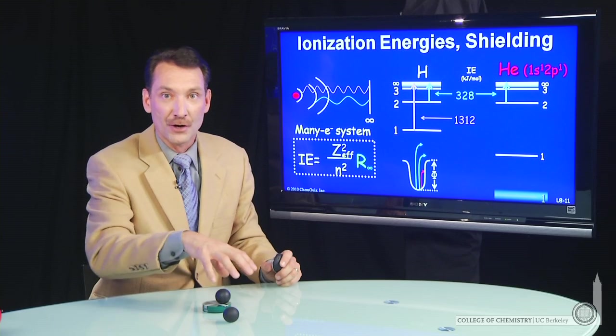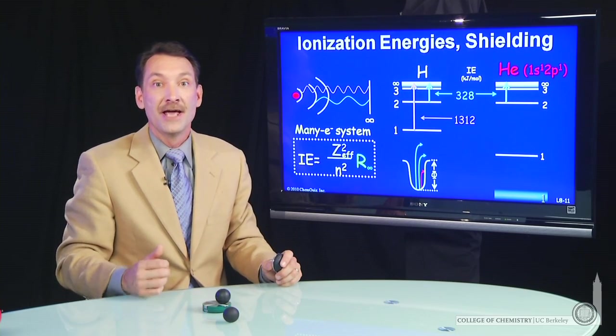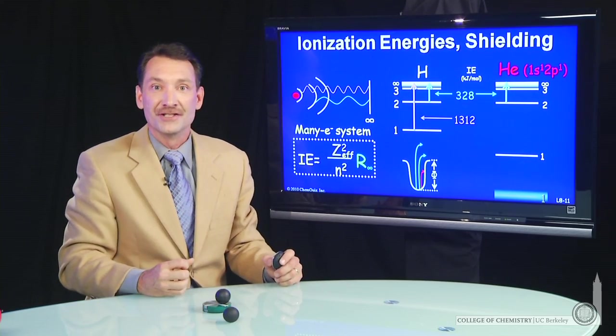L equals 0, s electrons on p and higher electrons. And that influences the actual ionization energies that we measure.